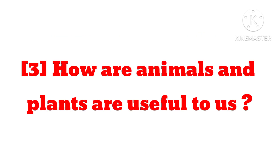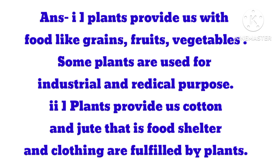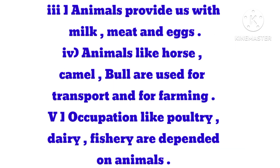Question 3: How are animals and plants useful to us? Answer: Plants provide us with food like grains, fruits, and vegetables. Some plants are used for industrial purposes. Plants provide us cotton and jute — food, shelter and clothing are fulfilled by plants. Animals provide us with milk, meat and eggs. Animals like horse, camel and bull are used for transport and farming. Occupations like poultry, dairy, and fishery depend on animals.